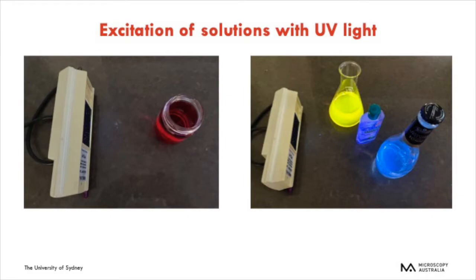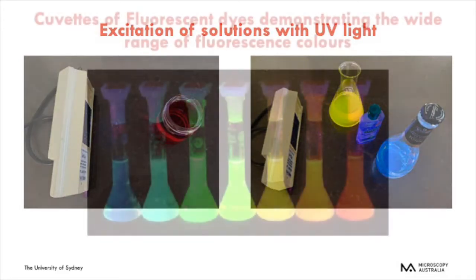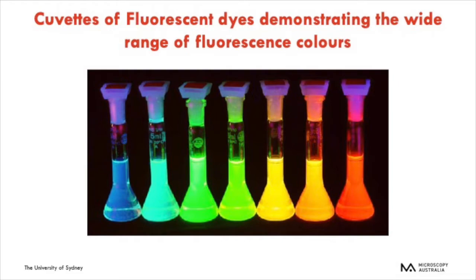The solutions seen so far have been fluorescing in the violet and yellow, but there are many fluorescent molecules and this image displays some of the range of colours. You can imagine how beautiful your specimens can be if you label different parts with a variety of probes — some people have used up to eight different probes. This is incredibly hard to prepare, but you'll learn about specimen preparation in future lectures.